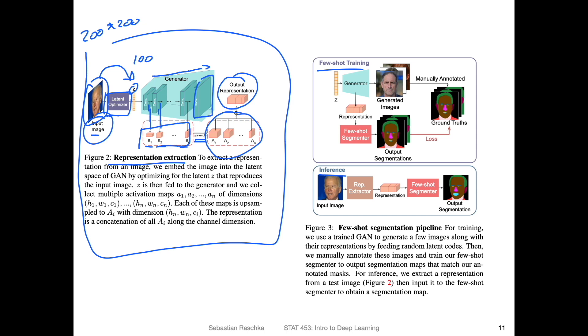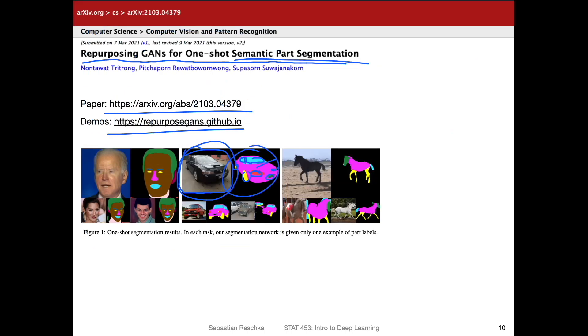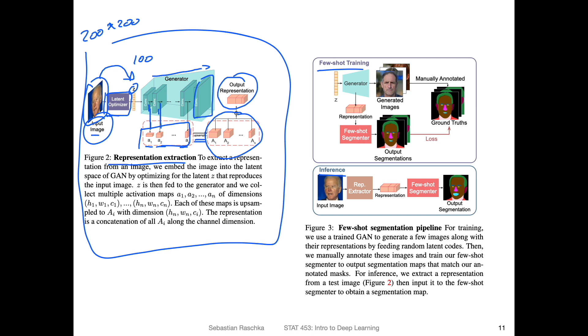So they take these activations, upsample them, and then they combine them to get this output representation. And that is essentially the mask. So this is the mask that they get. For the face image, they get the corresponding mask here. So the output representation is this mask that they generate. So how does the training look like?